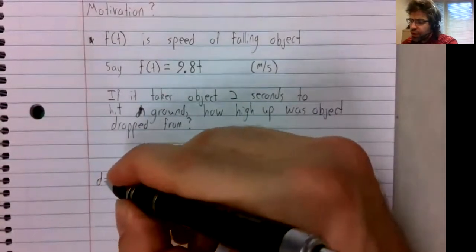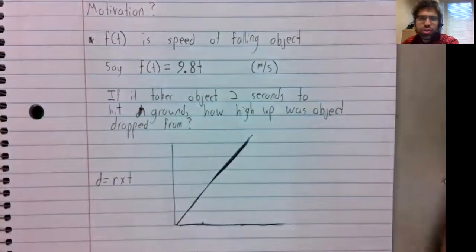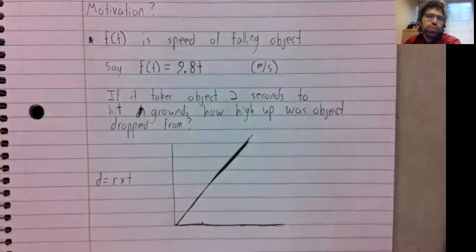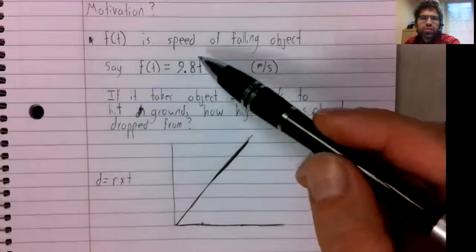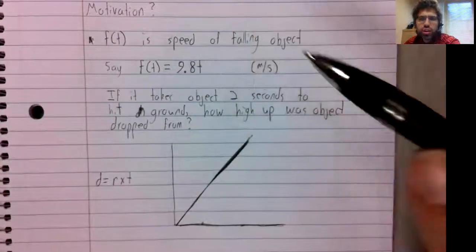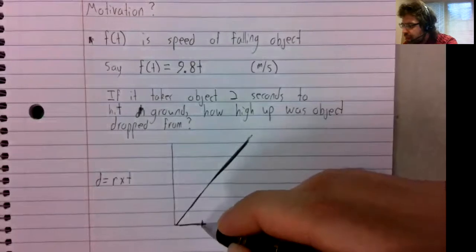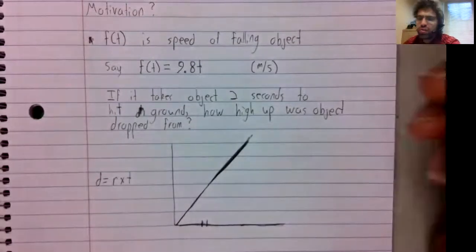However, let's look at an alternative graphical way of approaching this. We know that distance equals rate times time, but we also know that only works if the rate is constant. The rate isn't constant. It's changing all the time. Be that as it may, let's try to use this formula.